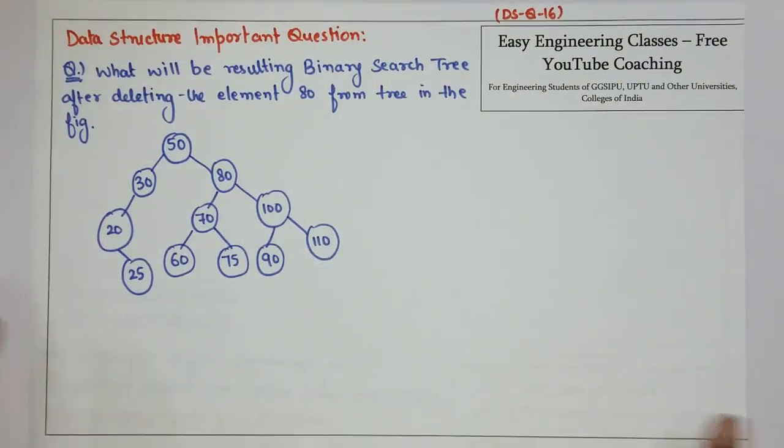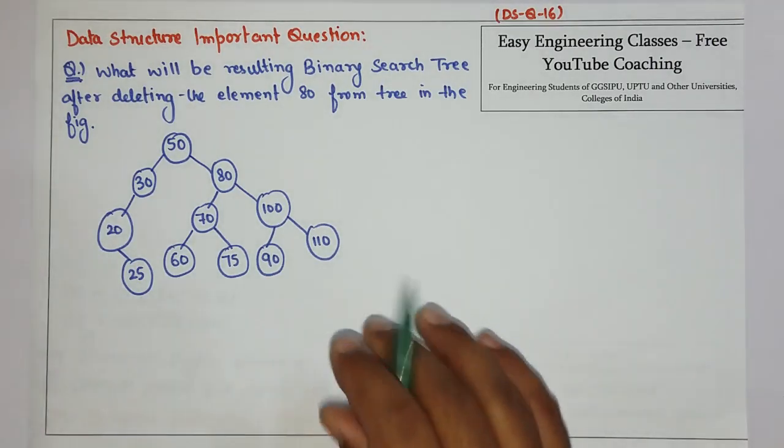Hello everyone, this is a question related to the deletion of a binary search tree. The question says what will be the resulting binary search tree after deleting the element 80 from the tree in the given figure.